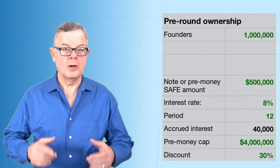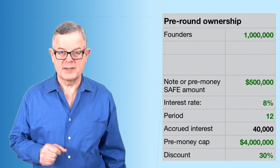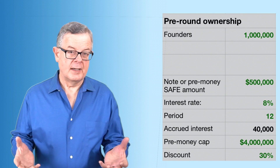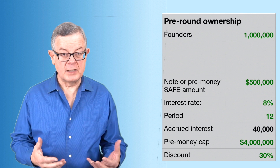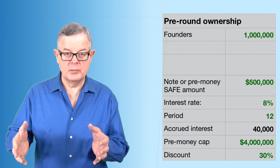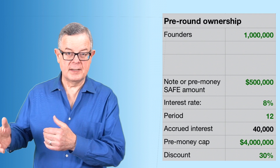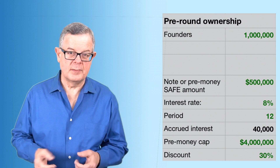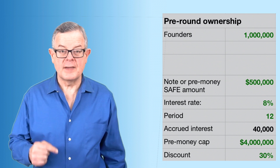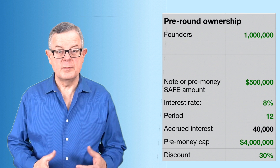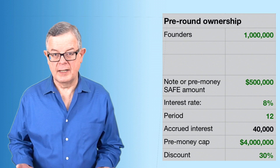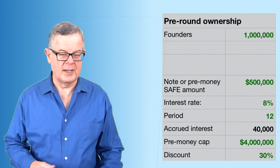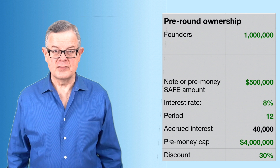Here's the first part of the spreadsheet where you plug in how much stock the founders initially have — we're starting with a million shares. We assume you've closed either a note or a pre-money safe for some funding, plugged in five hundred thousand dollars. Assuming this is a note with an eight percent interest rate converting in 12 months, that adds forty thousand dollars. We're also assuming a pre-money cap of four million and a discount of 30 percent. For a safe, just set the interest rate to zero.